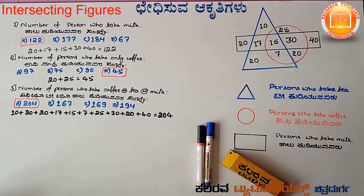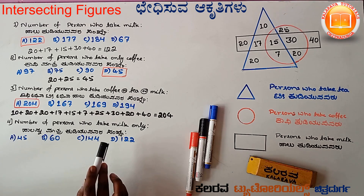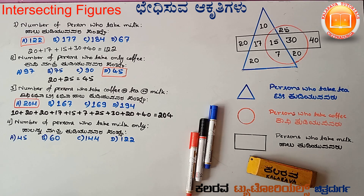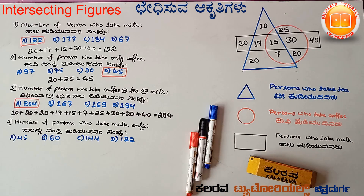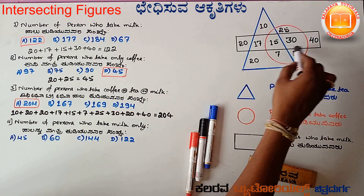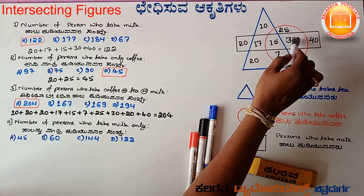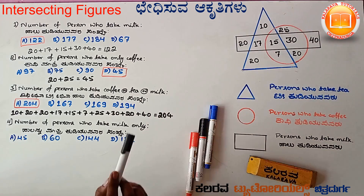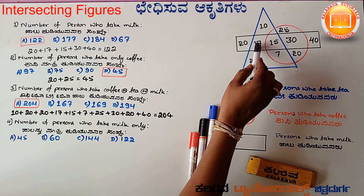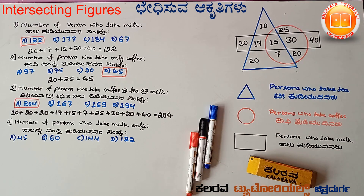Option A is the correct answer. So here we observe four questions. The fourth question is: number of persons who take milk only. So here we have to take milk only — those numbers exclusively within the rectangle region.